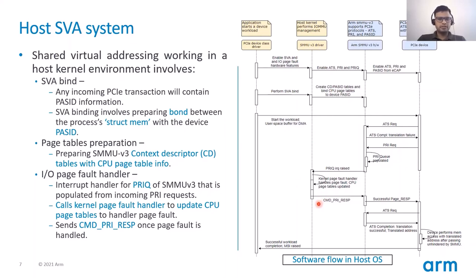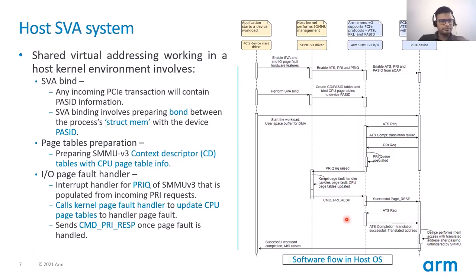Once the CPU page tables are populated with the correct VA to physical address mapping, a successful PRI response must be sent to the PCI device. As part of this, the SMMU v3 sends a command PRI response, and the SMMU v3 hardware sends a successful page response to the PCI device. Once the PRI succeeds, the device can send the ATS request again — this time the ATS will succeed with the VA to PA translation — and the DMA workload is completed.